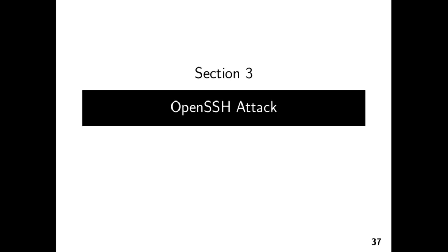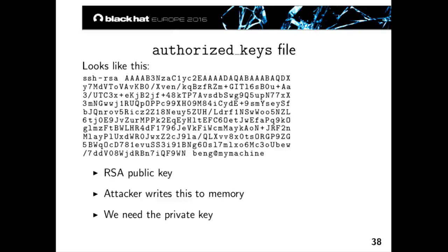Let me tell you how the OpenSSH attack works. If you have an OpenSSH server, you generate an RSA key pair, put the public part into the authorized_keys file, and every time you log in using SSH, the OpenSSH server does a challenge-response to verify you own that public key. An important thing that happens during this challenge-response is that the OpenSSH server reads the authorized_keys file from its filesystem into memory — into the page cache. This means we can target it with Flip Feng Shui. Conveniently, the page cache is page-aligned, so we don't have to worry about alignment of the public key.